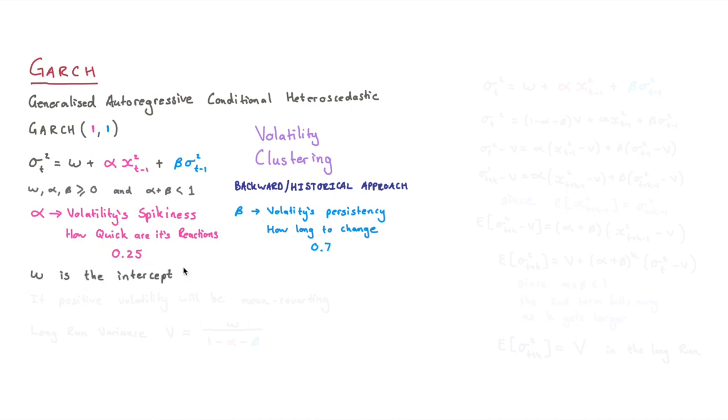But what I want to do in this video is look more to the long-term variance. So like I said, if w is the intercept, and if it's positive,